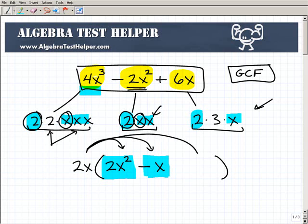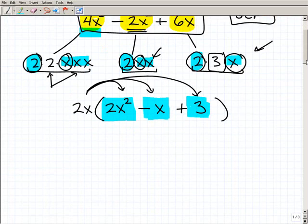All right, so 2x times what else will get us back to 6x? So just let's go back over here, look at our factors. 2x is our GCF, so 3 is what we need, right? So 2x times 3 will get us back to 6x. So this is the factor here.